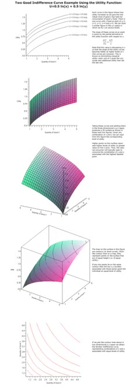There is no bliss point — a consumption bundle that is preferred to all others. Indifference curves are typically represented to be defined only in the non-negative quadrant of commodity quantities, i.e., the possibility of having negative quantities of any good is ignored. They are negatively sloped: as quantity consumed of one good increases, total satisfaction would increase if not offset by a decrease in the quantity consumed of the other good. Equivalently, satiation — such that more of either good or both is equally preferred to no increase — is excluded.